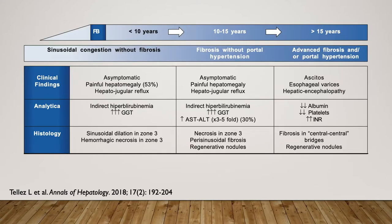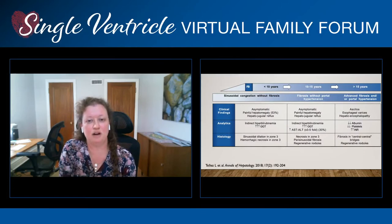Typically, less than 10 years after the Fontan operation, we don't see much in the way of advanced fibrosis, significant portal hypertension, or complications from advanced liver disease. If you're less than 10 years after a Fontan operation, most often you're asymptomatic. Very rarely, people describe a right upper quadrant abdominal discomfort or heaviness, just from the liver being a bit engorged. In labs, sometimes we'll see a mildly elevated bilirubin level or a mildly elevated GGT. If we were to biopsy the liver, we would see it look congested — a little boggy or edematous.